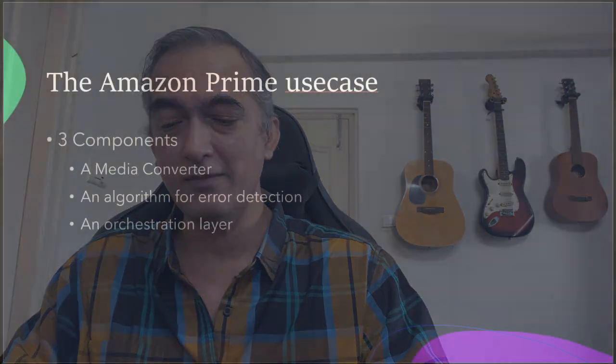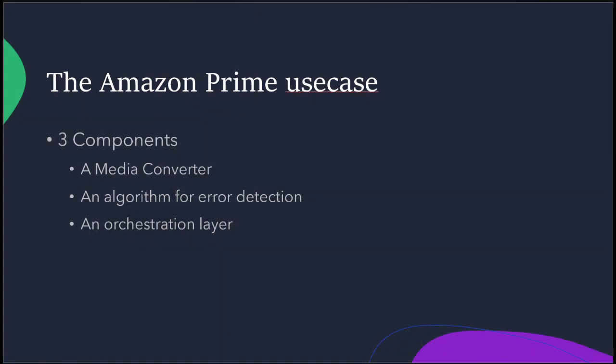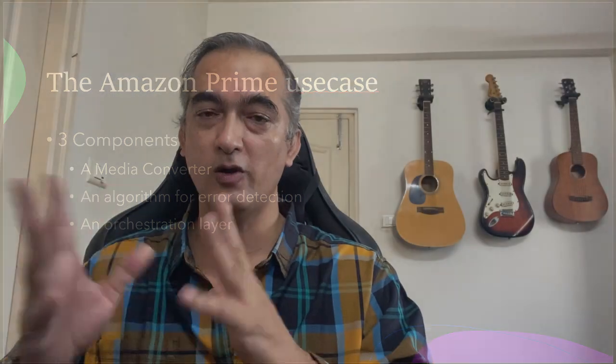Amazon Prime had a very simple architecture. It has a media converter that takes all the video and converts it into consumable content, and then takes all its audio and converts it into buffers. It has an algorithm for error detection, and the third component is an orchestration layer that essentially orchestrates between all the other two components.